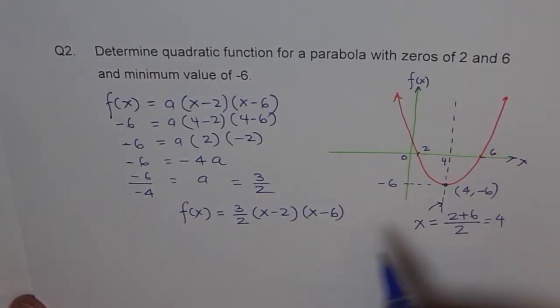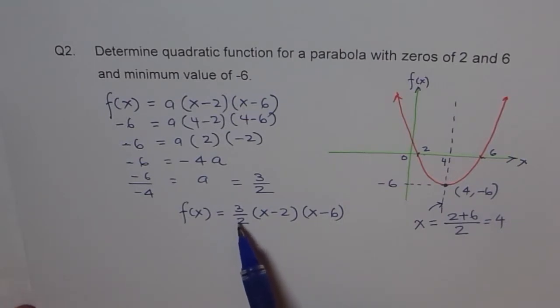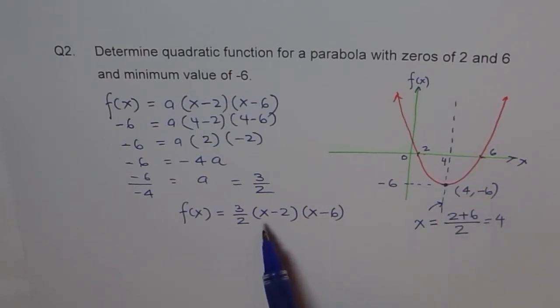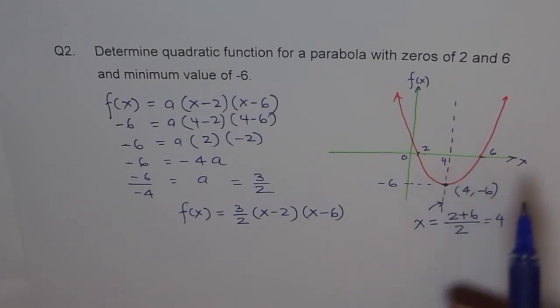Well, let's check it. Now, first thing is, leading coefficient is positive, so the parabola opens upwards. That makes sense. It is here, opening upwards. x-intercept is at 2, yes, given, and x-intercept is at 6, given. Perfectly matching.